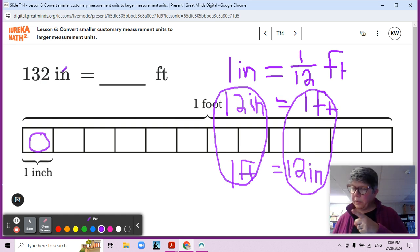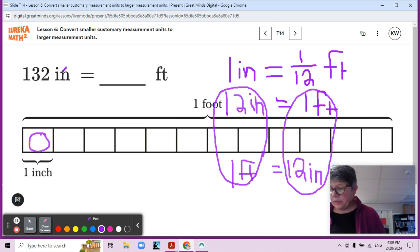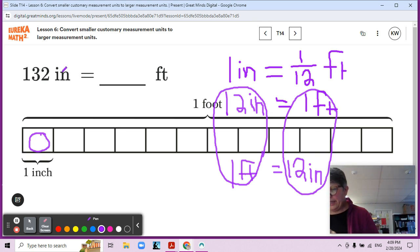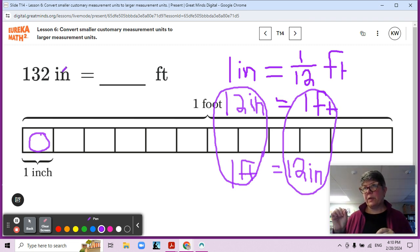Because the number of feet is one 12th as much as the number of inches, is the number of feet greater or less than the number of inches? It's going to be one twelfth as much. The number is going to be smaller, right? Okay. Less than the number of inches because one twelfth is less than one whole, right? Why does it make sense that a smaller number of feet is the same amount as the larger number of inches? Think back to hours and seconds, right? Seconds are smaller so the number is going to be larger.